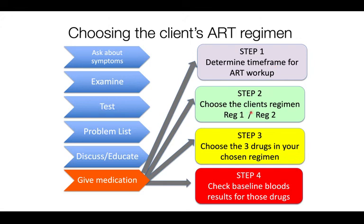Has your patient been exposed to ARVs before? If yes, what were the reasons? Probably that patient should be starting on second-line already if they had failed first-line before. But if your patient has never been exposed to ARVs, then it's a first-line regimen for that patient.